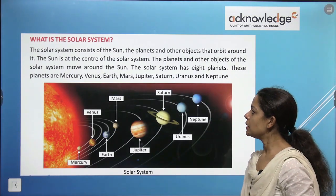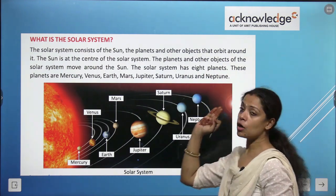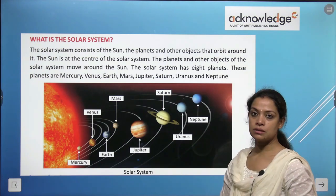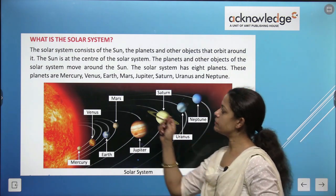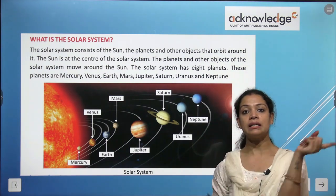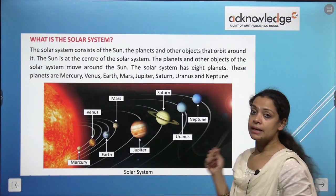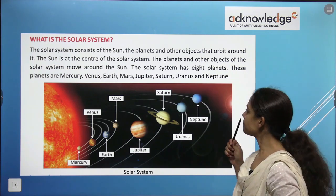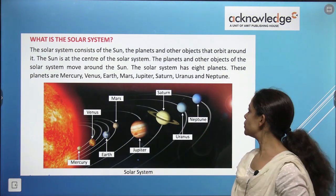What is the solar system? The solar system consists of the sun, the planets, and other objects that move in a fixed orbit around it. The sun is at the center of the solar system. The solar system has eight planets: Mercury, Venus, Earth, Mars, Jupiter, Saturn, Uranus, and Neptune.